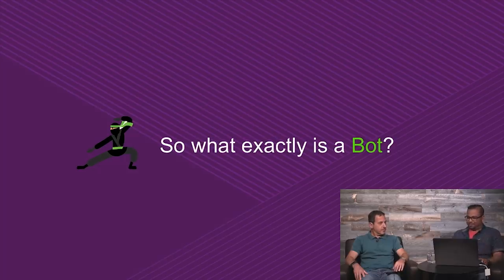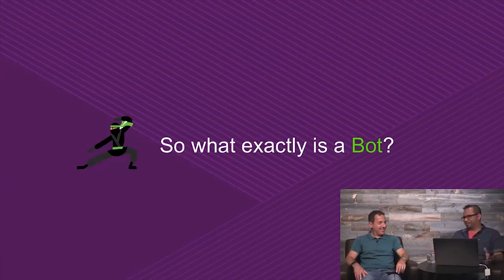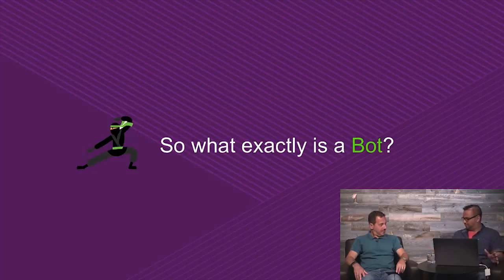One of the things I've seen whenever we talk about conversational bots — back in 2013 there was a movie called Her. It had Joaquin Phoenix in it. It got a little weird quickly — it was about conversational bots. This lonely writer started having a relationship with his conversational bot because it was so smart, and it kind of got him very quickly. That's kind of the AI aspect of being a bot and how smart it can get.